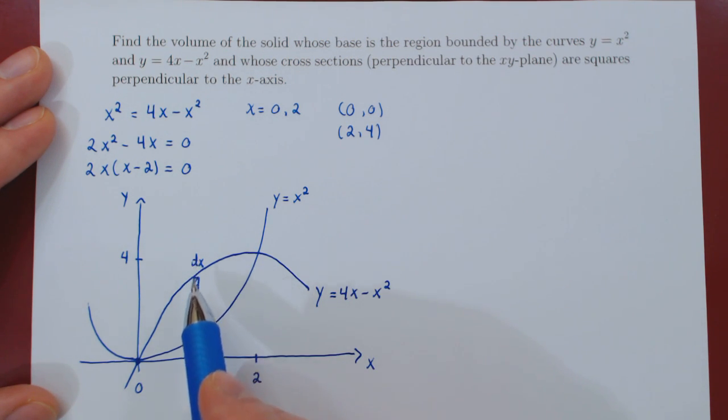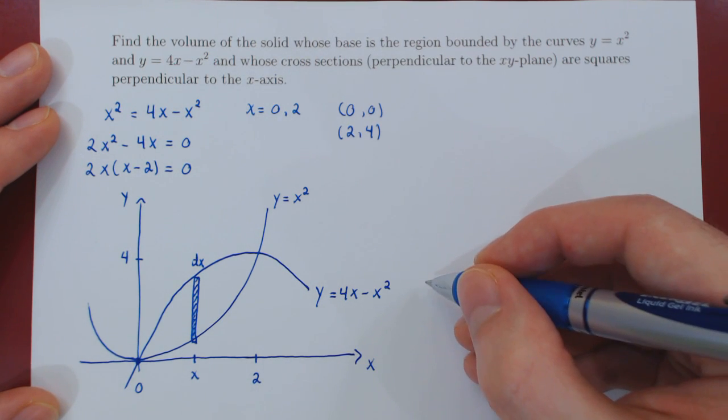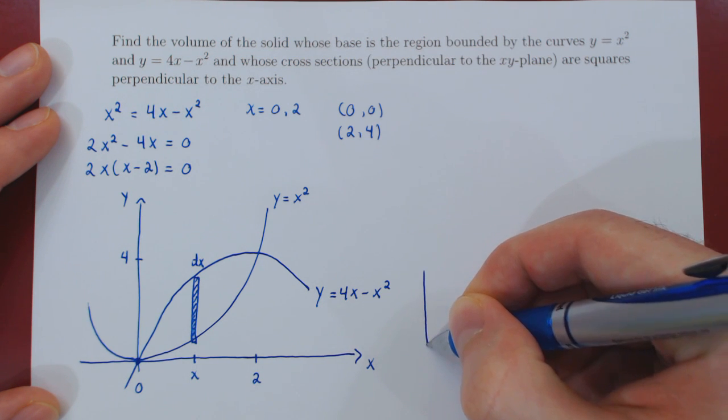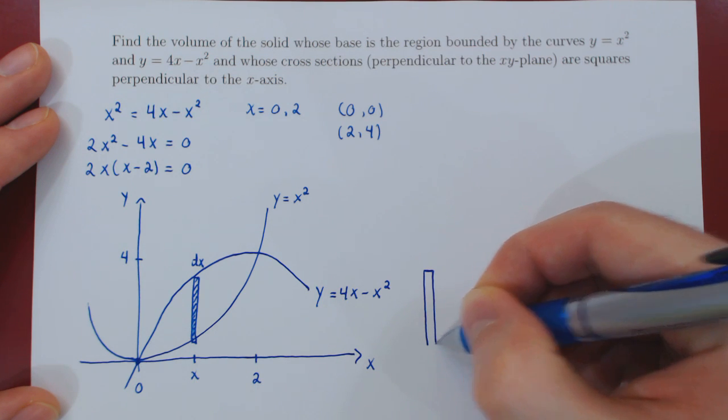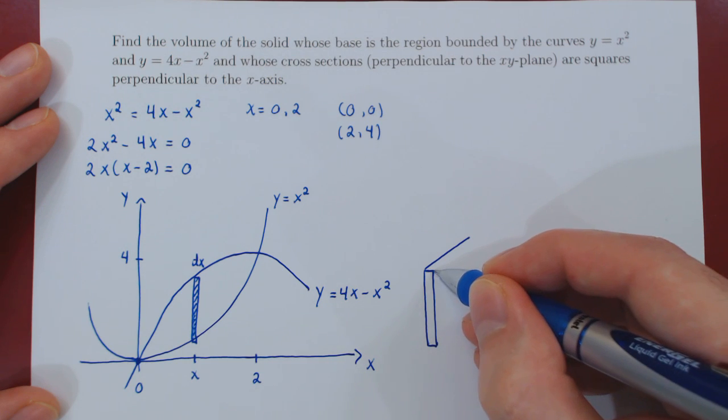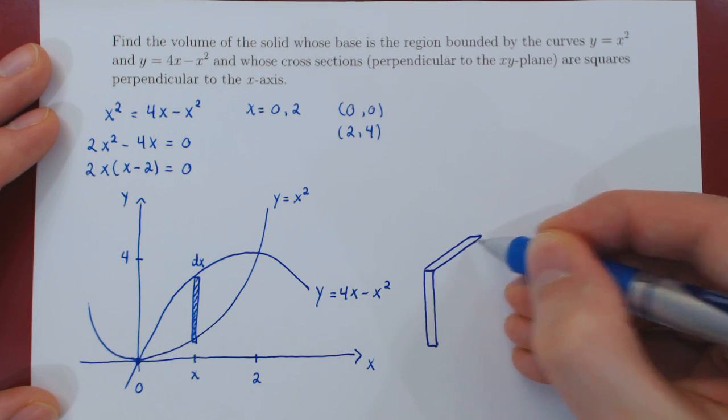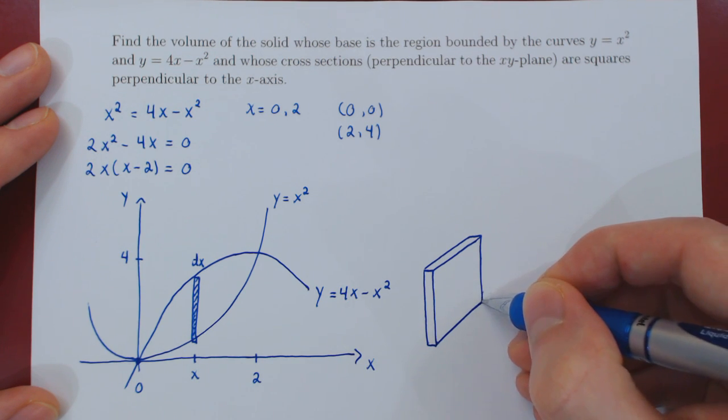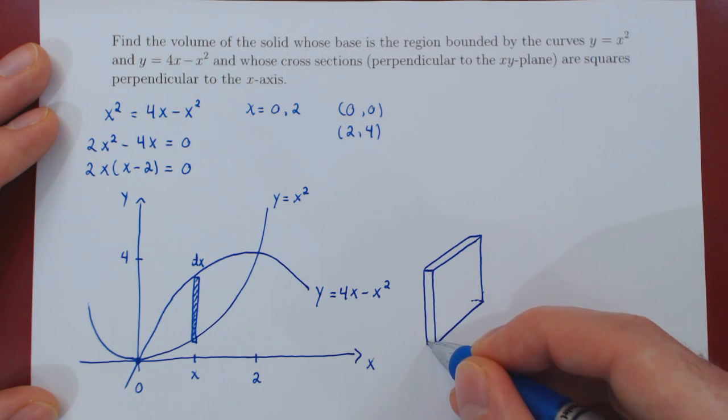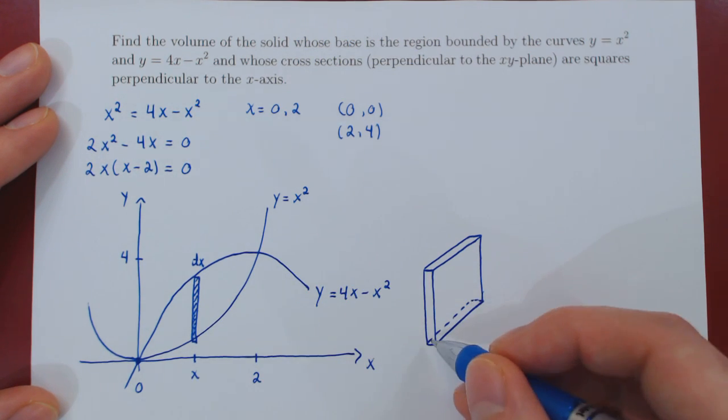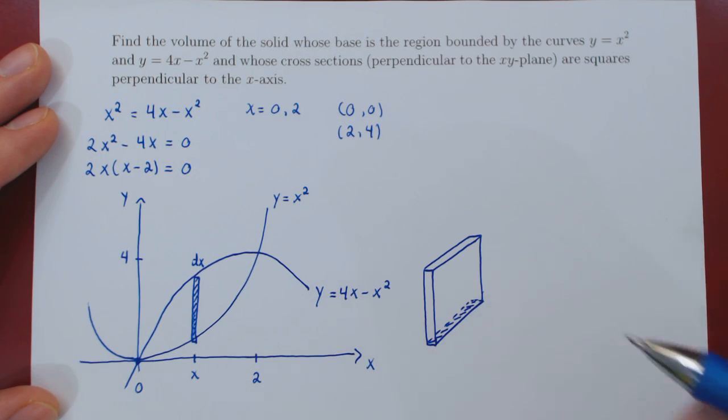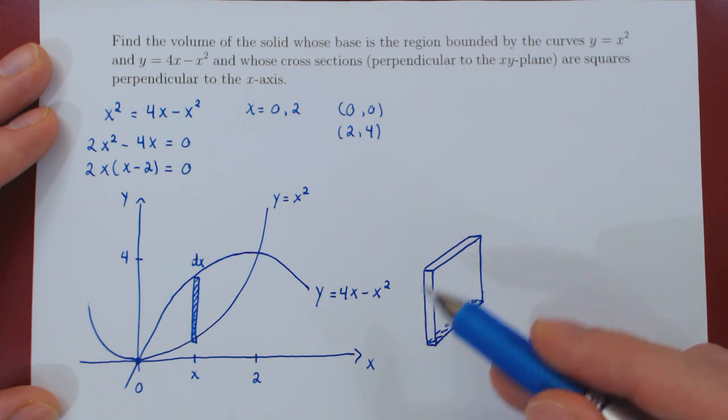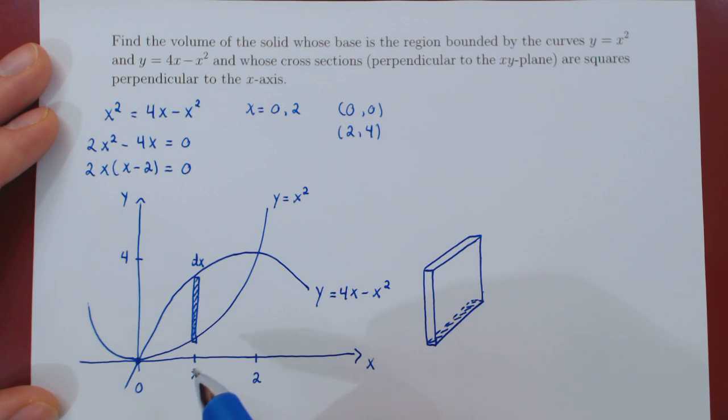So we cut through the solid this way, and the result is supposed to be a thin square. And the base of our little square is this little infinitesimal rectangle. So this is now the little slice of our solid that was obtained by cutting through the solid perpendicular to the x-axis.